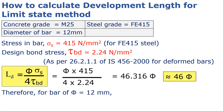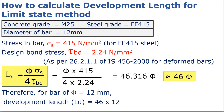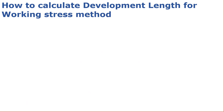Therefore, for a bar of diameter 12 mm, development length = 46 × 12 = 552 mm. Now let us see how we can calculate the development length for the Working Stress Method.